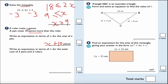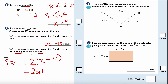Write an expression in terms of X for the total cost of 3 pens and 2 rulers. Well, that's 3 times (X plus 10) plus 2 lots of (X plus 10). Wait — it's 3X plus 2 lots of (X plus 10). Expanding: 2 lots of X plus 10 gives 2X plus 20, and then adding the 3X. Collecting like terms, 3X plus 2X is 5X, so the final answer is 5X plus 20.